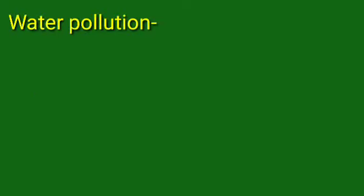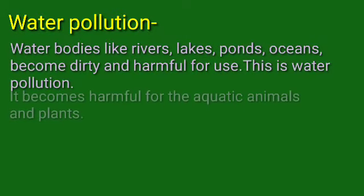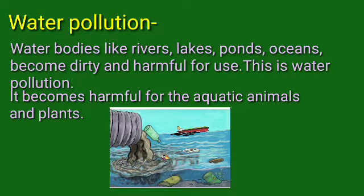Water pollution — what do you mean by water pollution? When water gets dirty, we cannot use it. Water bodies like rivers, lakes, ponds, and oceans become dirty and harmful for use. This is water pollution. It becomes harmful for the aquatic animals and plants as well.